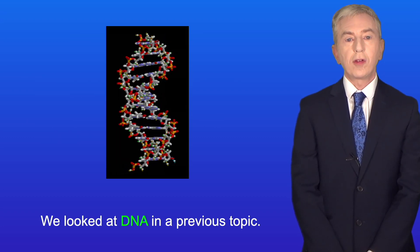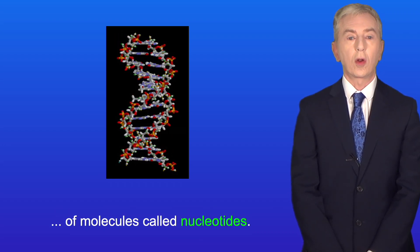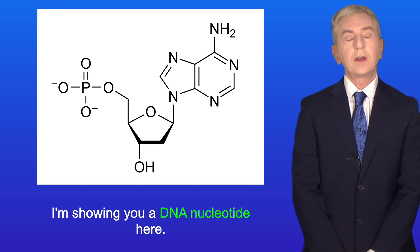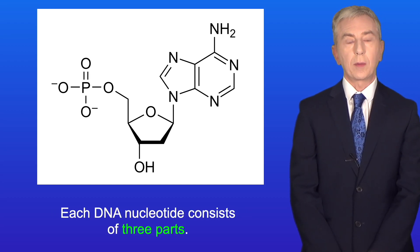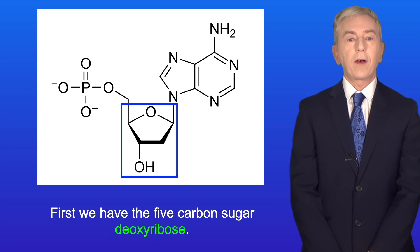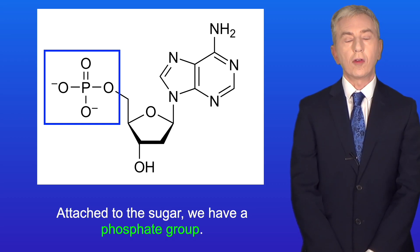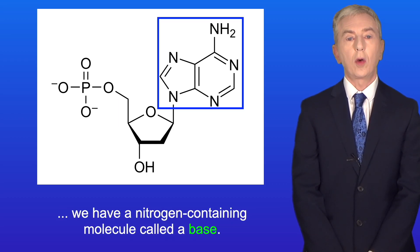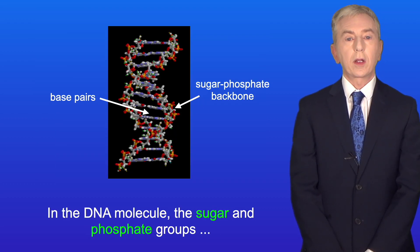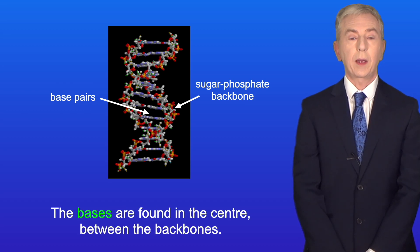Now we looked at DNA in a previous topic. Remember that DNA consists of a double-stranded polymer of molecules called nucleotides. Each DNA nucleotide consists of three parts: first we have a five-carbon sugar deoxyribose, attached to the sugar we have a phosphate group, and on the other side of the sugar we have a nitrogen-containing molecule called a base. In the DNA molecule the sugar and phosphate groups form the backbones of the two polymer strands, and the bases are found in the center between the backbones.